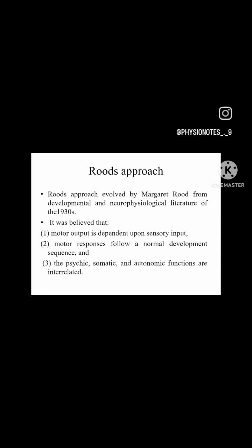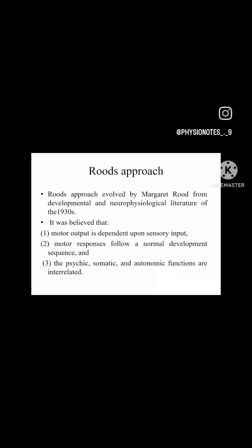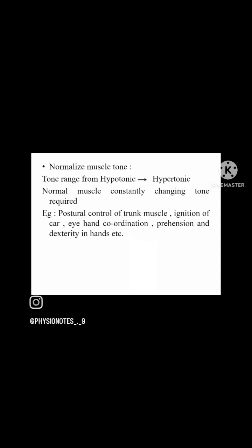As it suggests, normal developmental sequence follows the ontogenic pattern, which we will see in a later slide. Development will always occur in a normal developmental sequence. Third, the psychic, somatic, and autonomic functions are interrelated — all psychic, somatic, and autonomic functions related to sympathetic and parasympathetic systems are interrelated to each other.